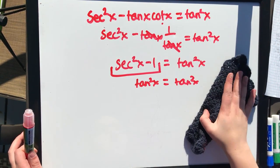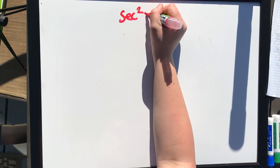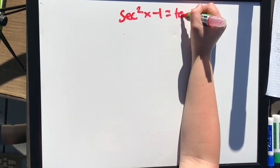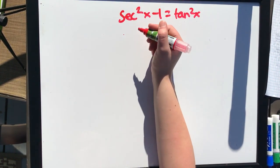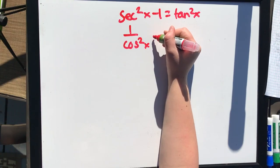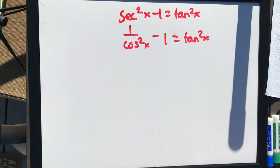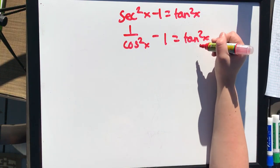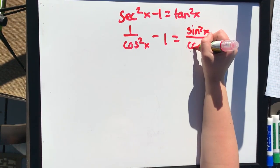For the harder way, we take secant squared x minus 1 equals tan squared x and convert it into forms of sine and cosine. This becomes 1 over cosine squared x minus 1 equals tan squared x, and we convert the right side into sine squared x over cosine squared x.